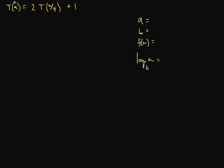Let's do an example. We have a recurrence relation where a = 2, b = 4, f(n) = 1, and log base b of a is log base 4 of 2, which equals 1/2. We need to determine which case applies.